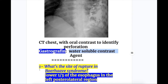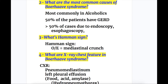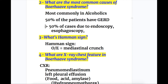Now, answers to the questions. Question one: what's the site of rupture in Bohr-Haave syndrome? Answer: lower one-third of the esophagus in the left posterolateral region. Question two: what are the most common causes? Most commonly it occurs in alcoholics and 50% of patients with GERD, gastroesophageal reflux disease. It may be iatrogenic in more than 50% of cases due to endoscopy or esophagoscopy.